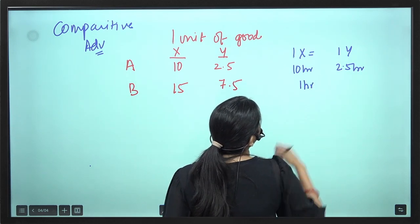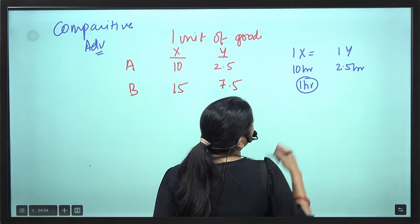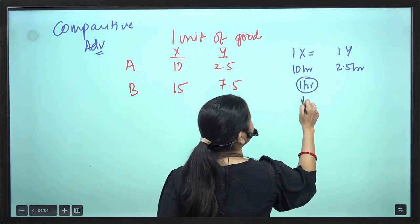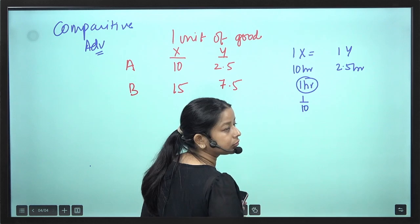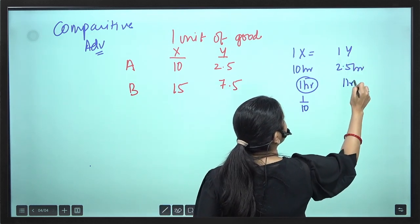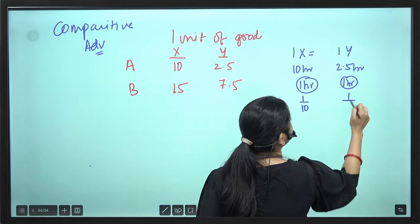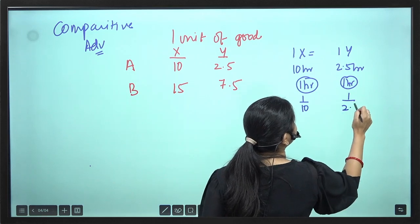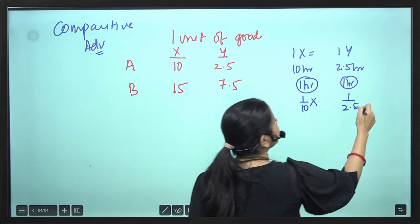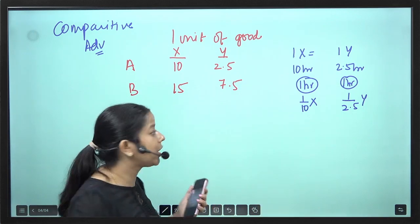In 1 hour of labour, how much X can you make? 1/10 of X. And how much Y can you make in 1 hour? 1/2.5 of Y. So 1/10 of X and 1/2.5 of Y.